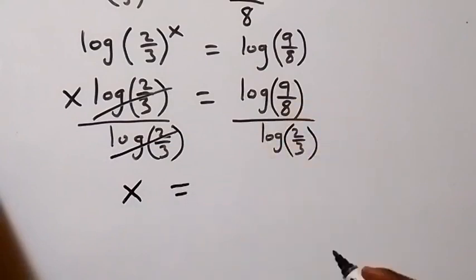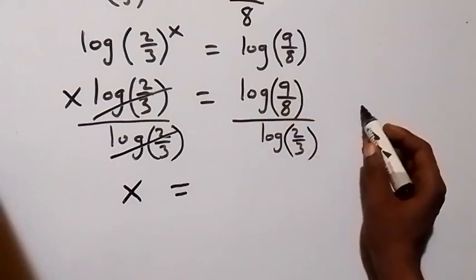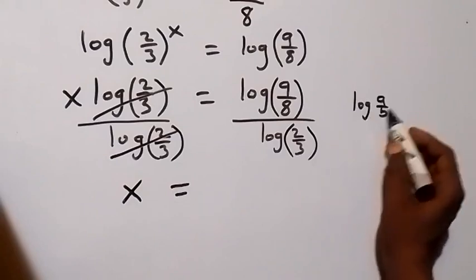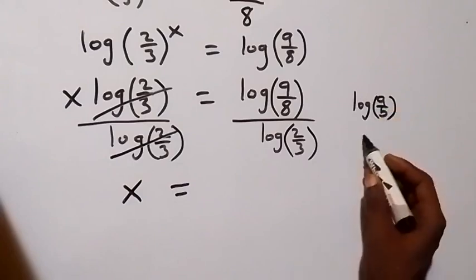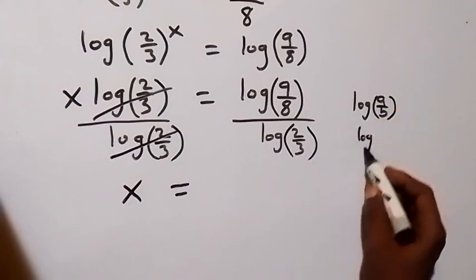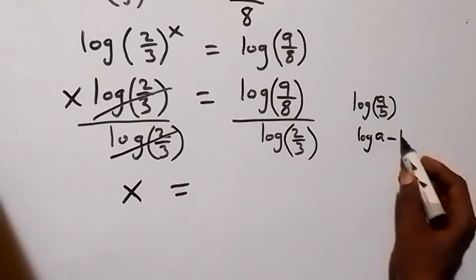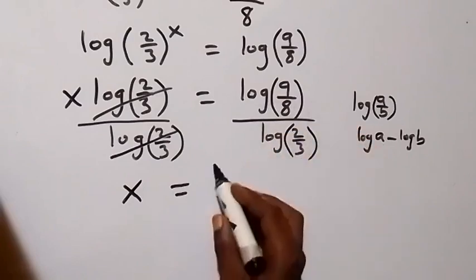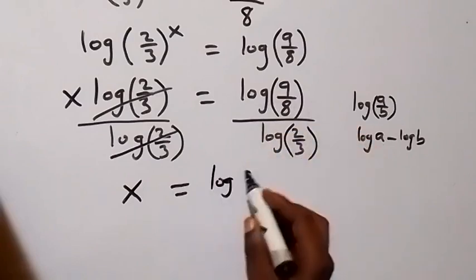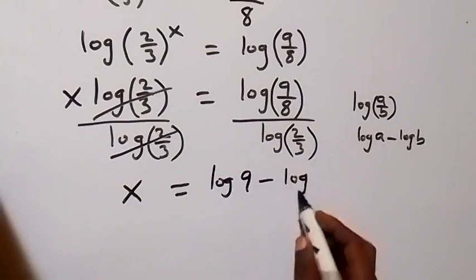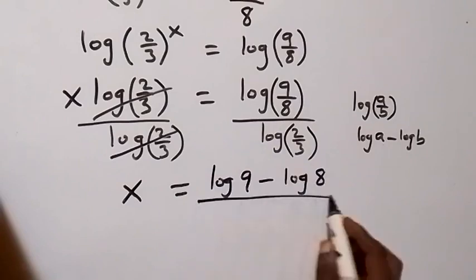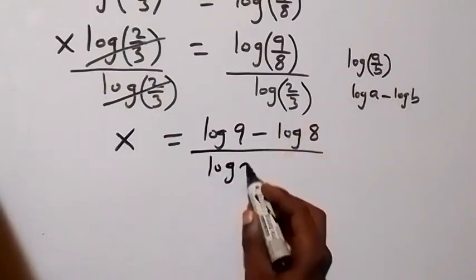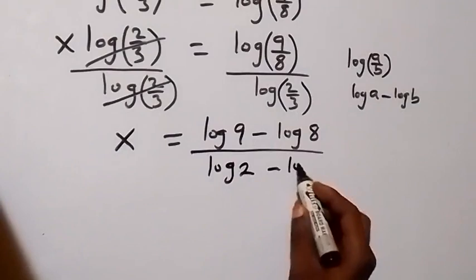Which equals to — and this is from the law of logarithms. When we have log a over b, we can separate this into 2 logs, and this will be log a minus log b. So when we apply this here, what we have on top will become log 9 minus log 8, then divided by log 2 minus log 3.